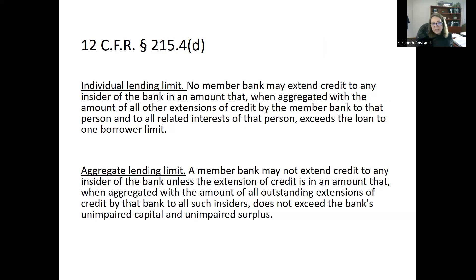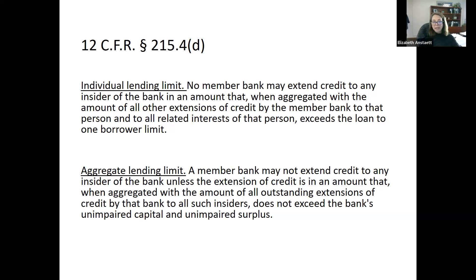In addition, the loans-to-one-borrower rules always apply to insiders. Sometimes directors are high-net-worth individuals who want large loans, and they are still subject to that rule. There is also another rule that aggregates all loans to insiders — they cannot exceed the capital and unimpaired surplus. Again, you want to protect the bank from those at the top using the bank for their own personal benefit and getting loans they couldn't obtain in the regular market.